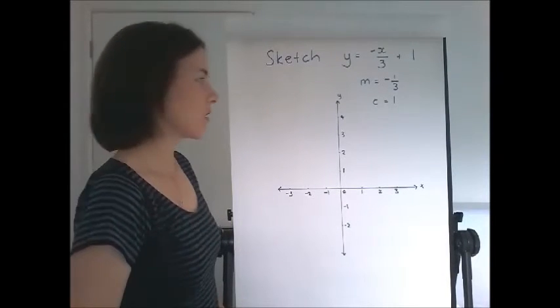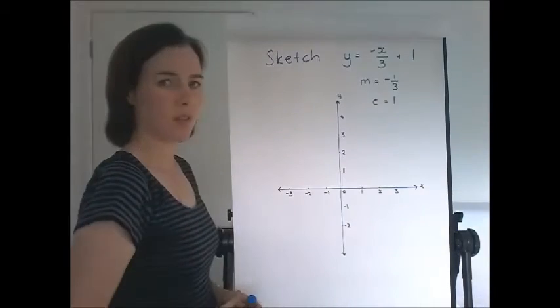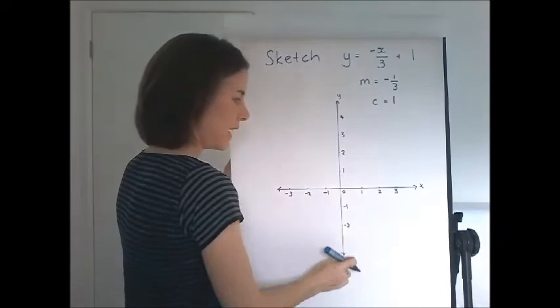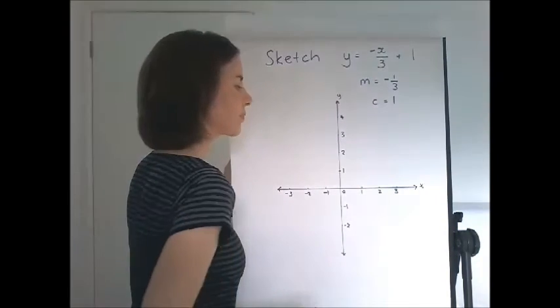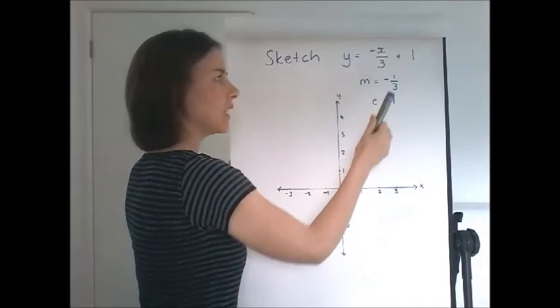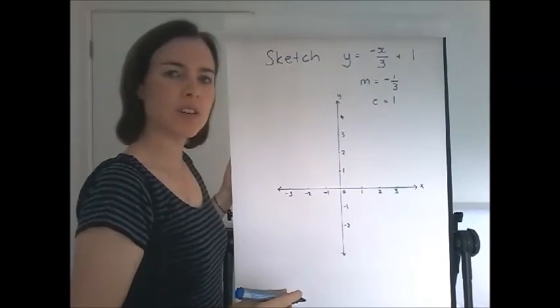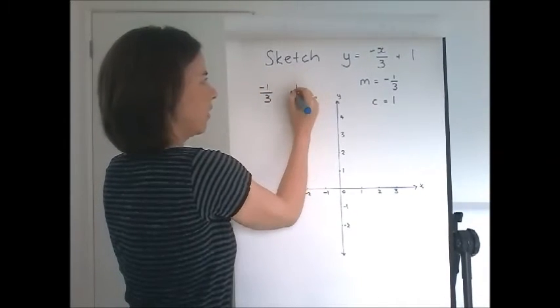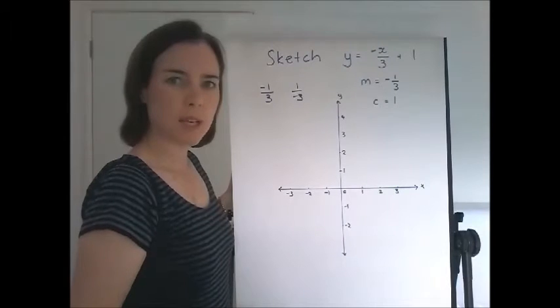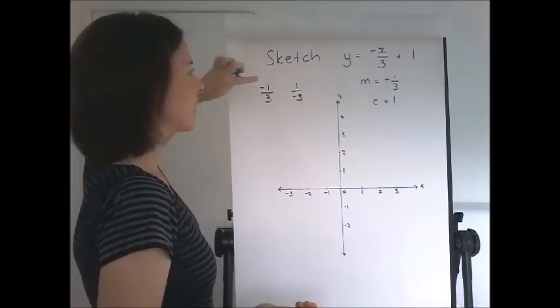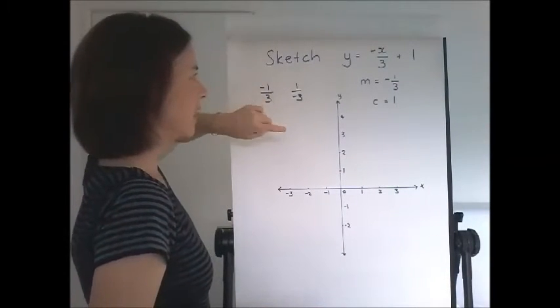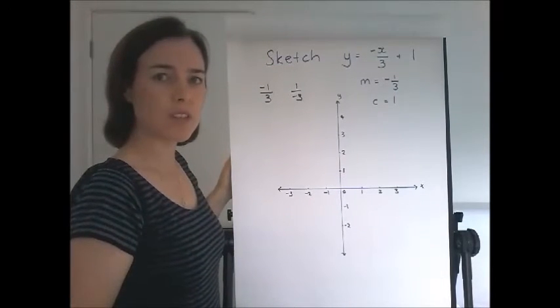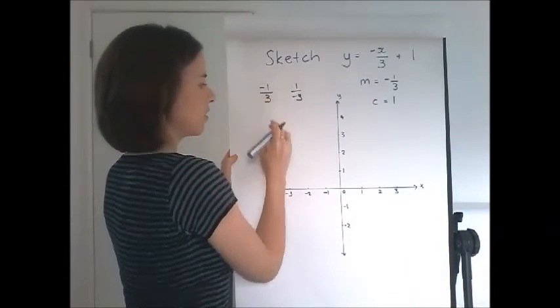So the first point that goes on the graph is the y-intercept, always. And in this case, it's positive 1. So we look at our y-axis until we find positive 1. From there, the gradient is negative 1 over 3. Now it doesn't matter if you go negative 1 over 3 or 1 over negative 3. But just make a decision one way or the other. You're either going to go down and to the right or up and to the left. And if you try those, they'll both give you the same line.